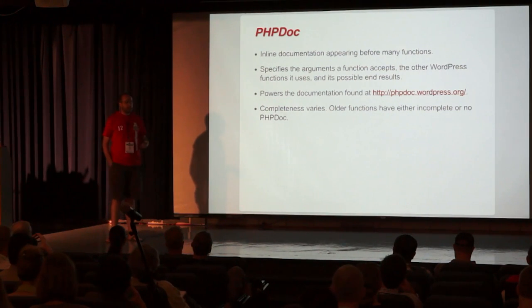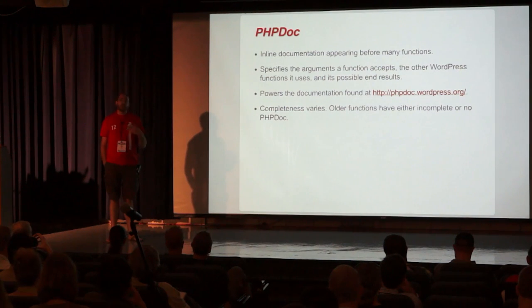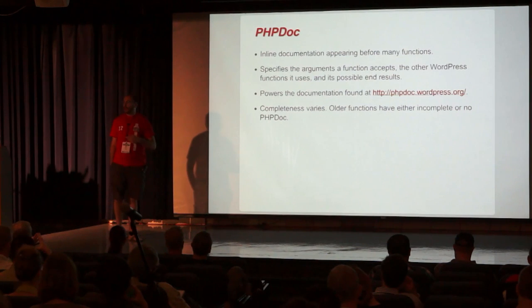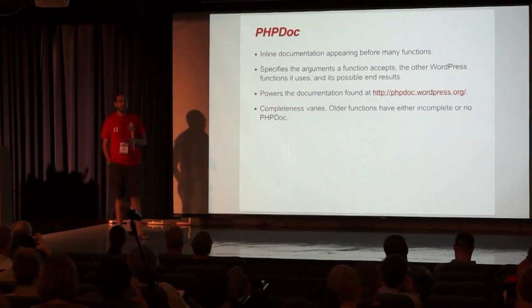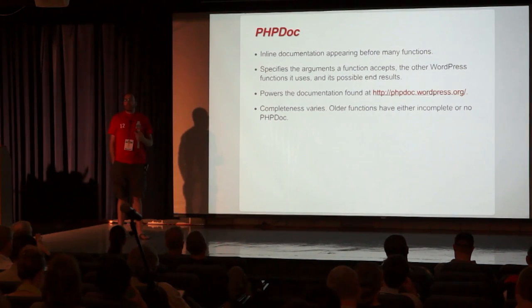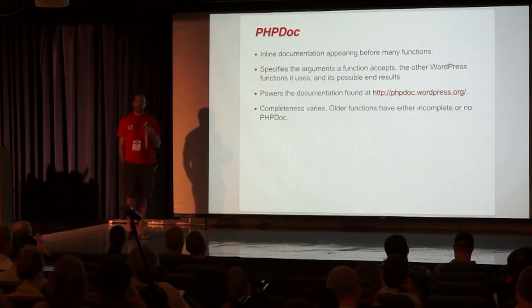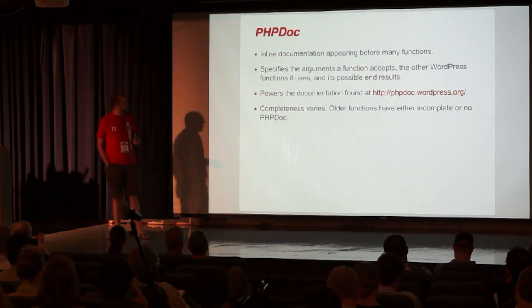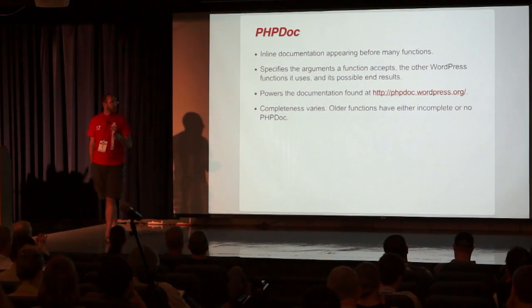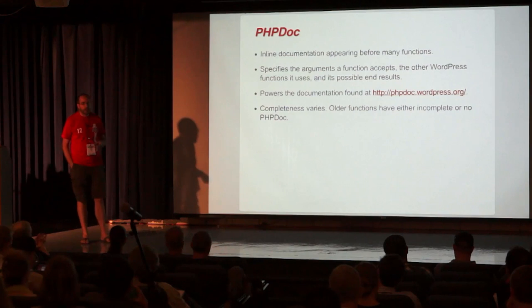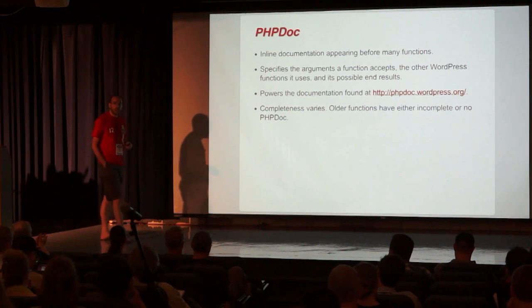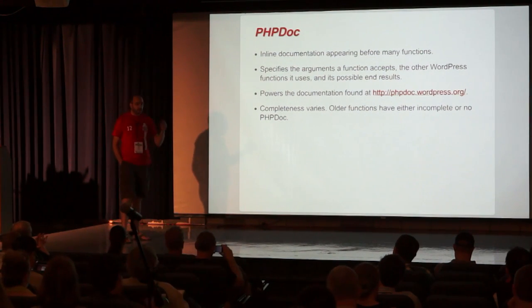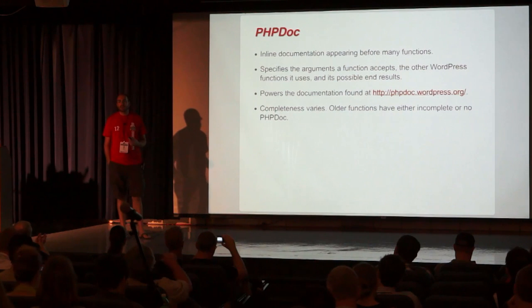What you'll find above most functions is a block that explains: what does this do, what arguments does it take if it takes any, what will it return, and what is it supposed to do if things either go right or go wrong — what are you going to get back? So if it's a function for sanitizing something and you pass it a string, are you going to get a string back, or if something goes sideways, are you going to get false back? There's a great resource — phpdoc.wordpress.org — that actually pulls that information out of core and makes it accessible online.